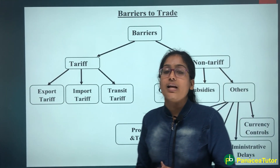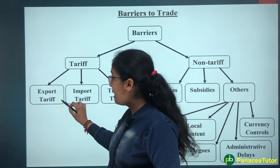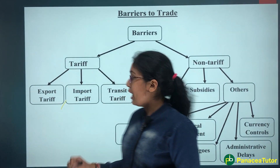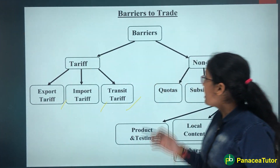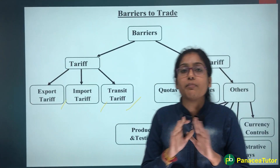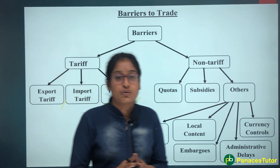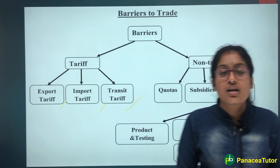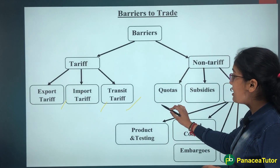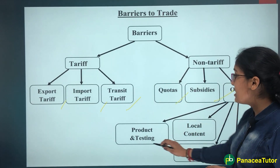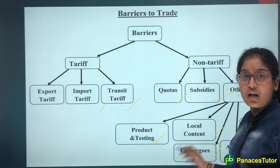Tariff Barriers kya hai — jo government jo hai, wo revenue receive kar rahi hai. Example: export tariff, import tariff, and transit tariff. Aur next hai Non-Tariff Barriers — government ko koi bhi revenue receive nahi ho raha. It could be in the form of regulations, conditions, formalities, etc. For example: quotas, subsidies, product testing, local content, embargoes, etc.